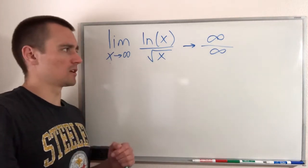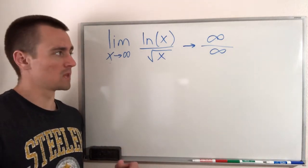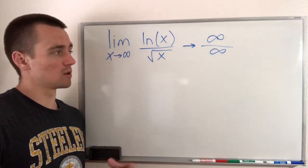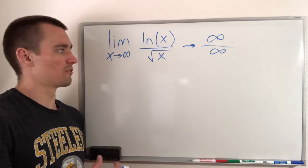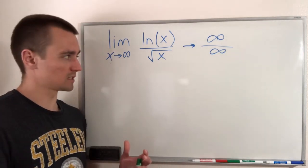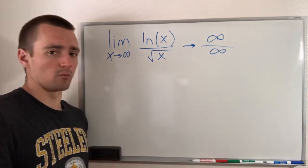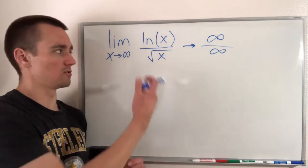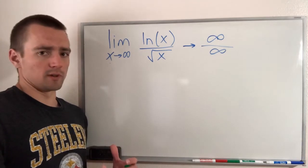So immediately looking at that, that tells you that L'Hôpital's rule is probably a good way to go about solving this problem. If you wanted to check the other two conditions required for L'Hôpital's rule, you would see that they would both be satisfied, which mostly comes from the fact that square root of x is defined for all positive x values, and also natural log of x and square root of x are both differentiable for any infinitely large x value.